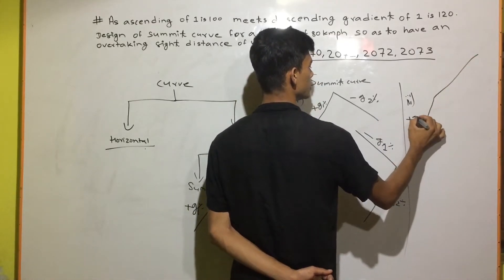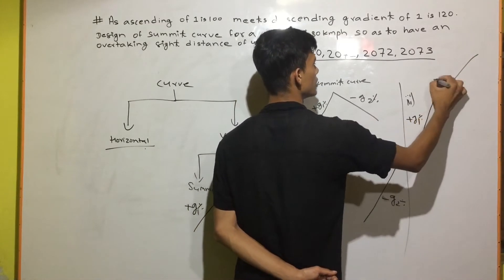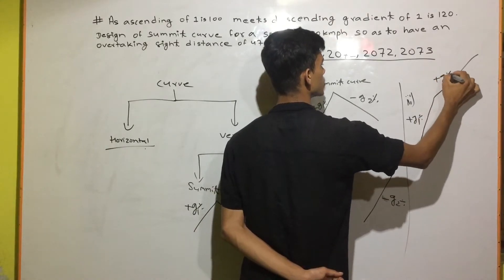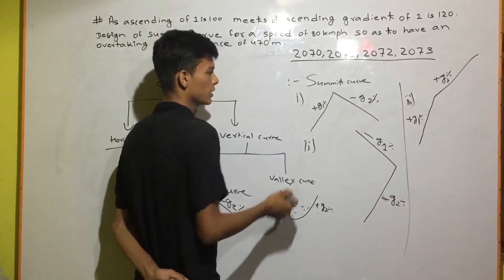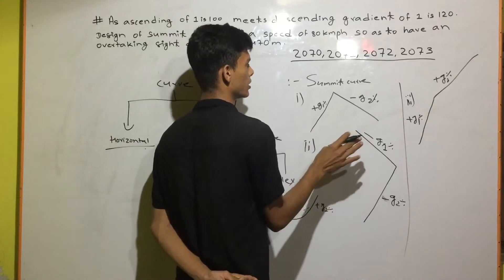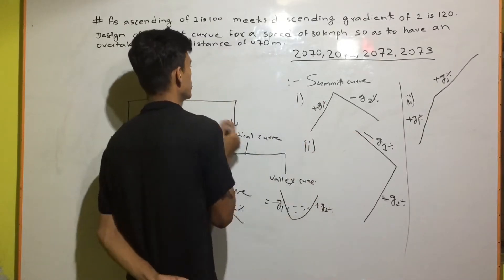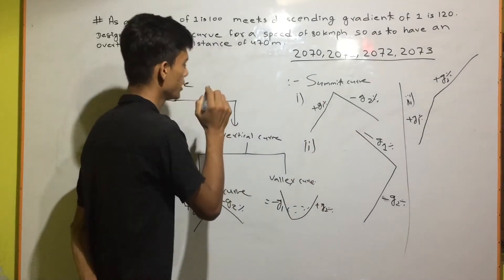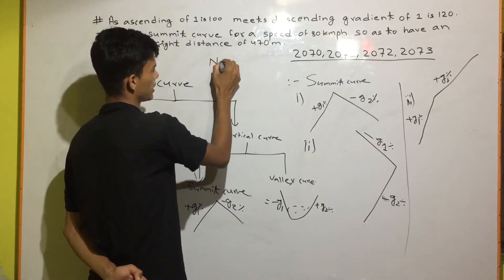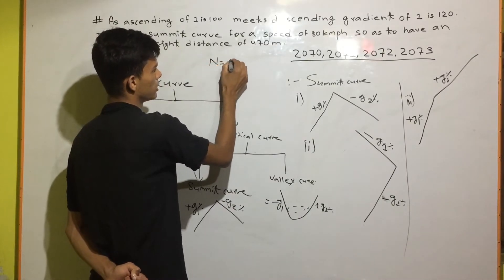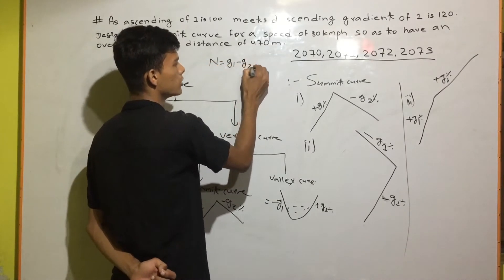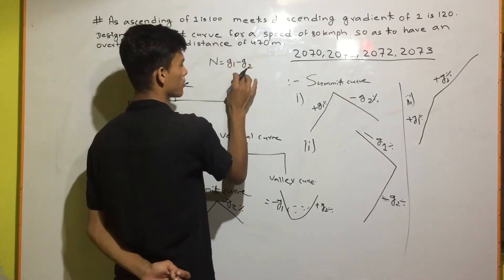Positive G1 percentage, G2 percentage. N is equal to G1 minus G2. This is the main formula.